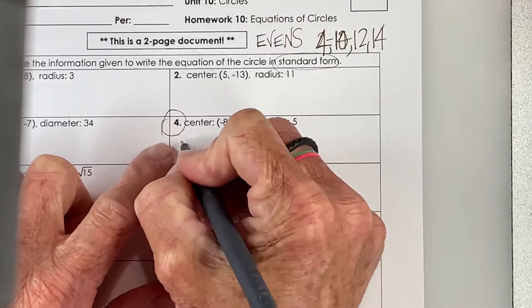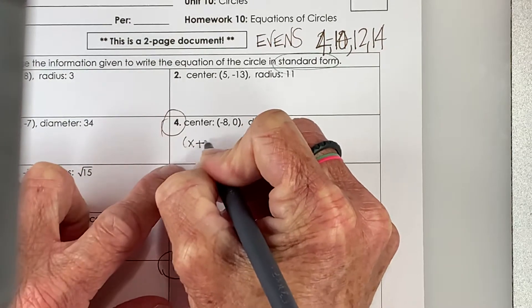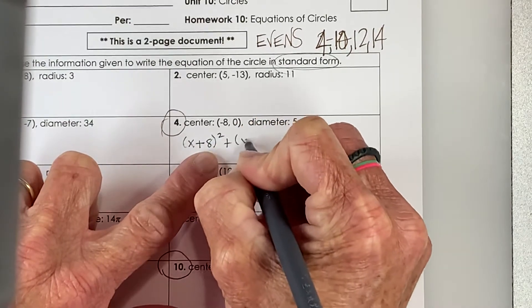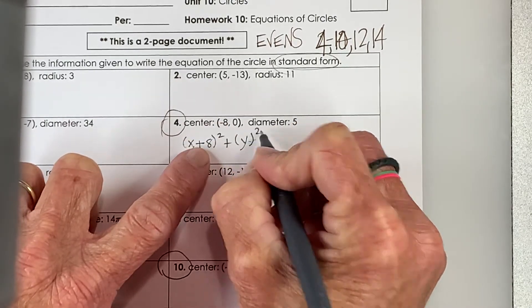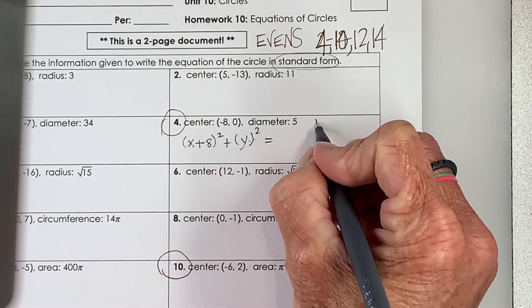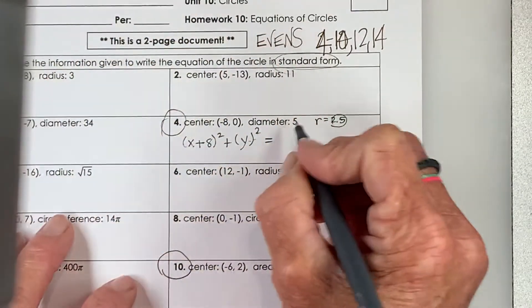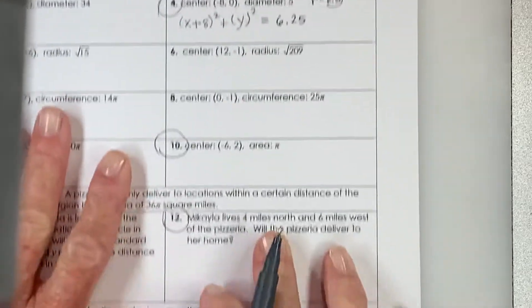So here we go, in standard form. So x minus a negative 8, when we plug that in, would become plus 8 squared, plus y. There's no reason to subtract 0. You could write minus 0. That would be fine. And that's equal to, now be careful, the diameter's 5, therefore the radius is 2.5, and be sure you square it when you plug it in. And when you square that, you get 6.25.